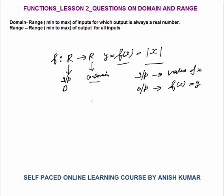Domain means the set of all input for which output is a real number. Our function is y = f(x) = mod x. The domain means the value of x for which output is a real number. You can see that I can put any values of x — all values are valid. I can put minus 3, I can put minus 2.